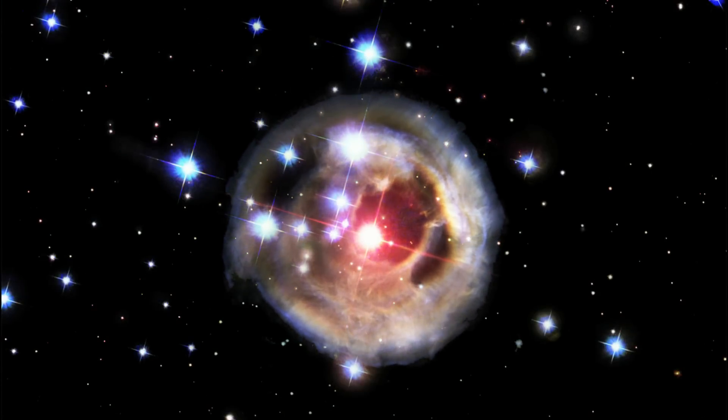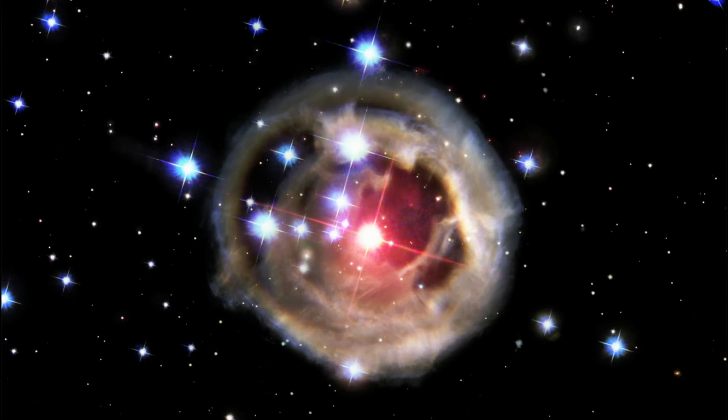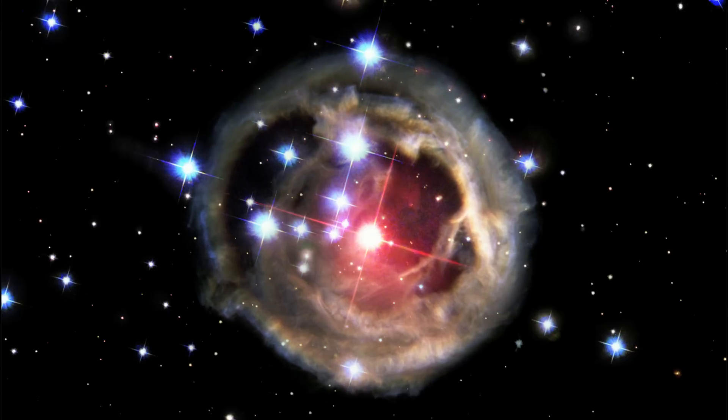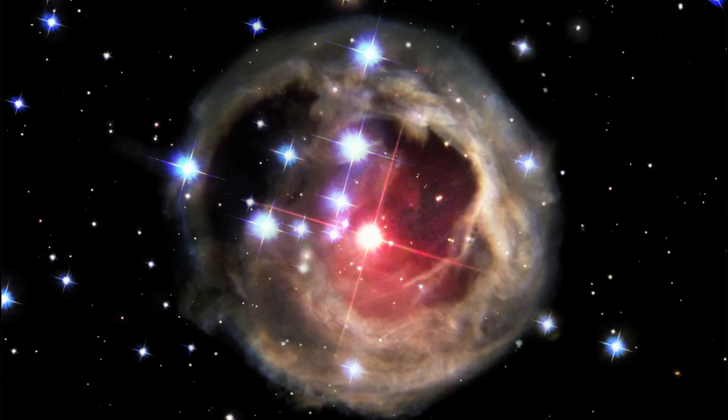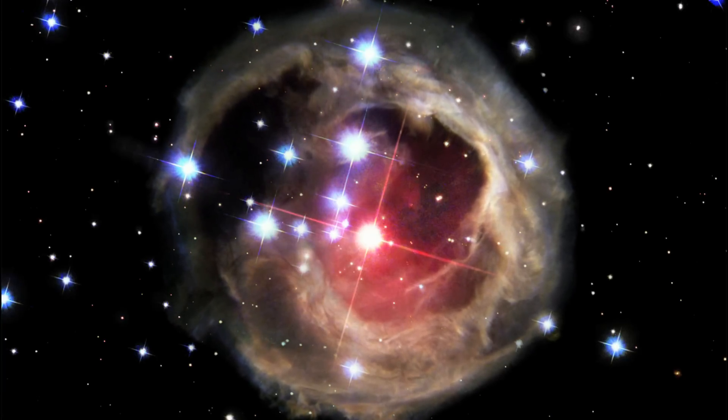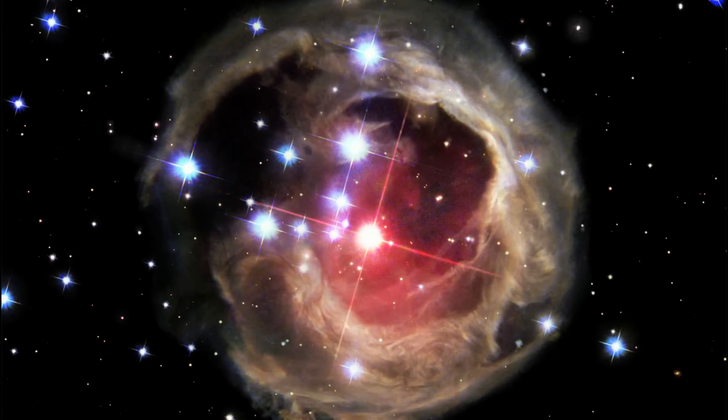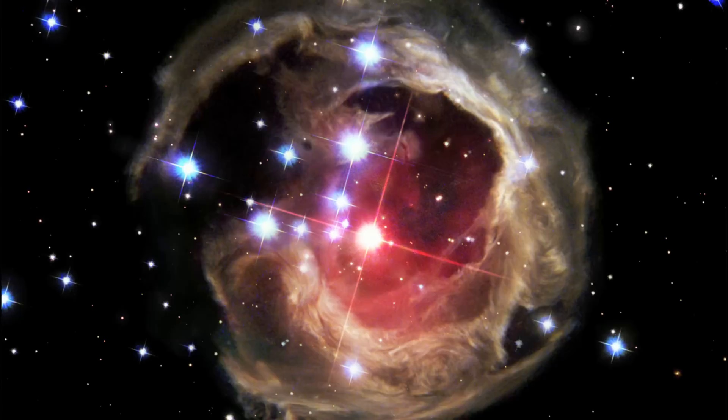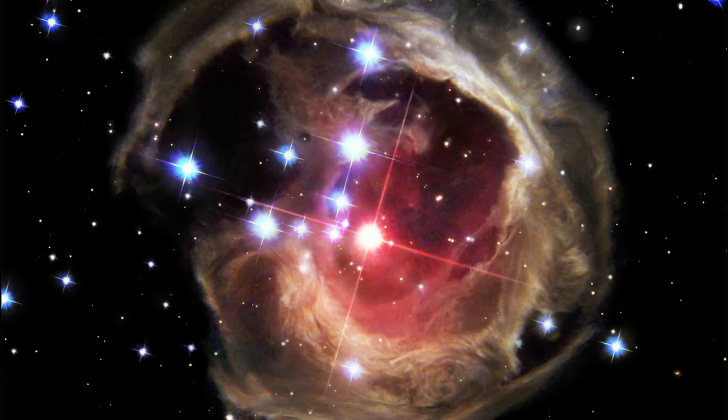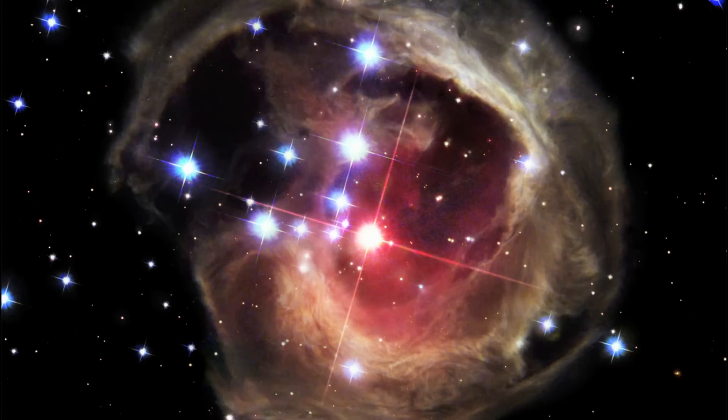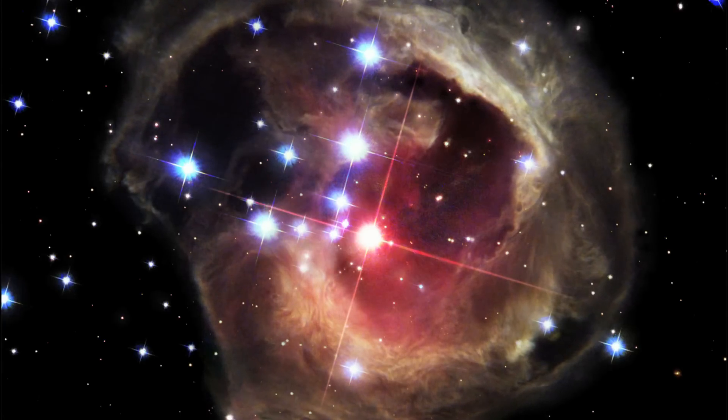Hubble also observed a light echo around variable star V838 Monocerotis in 2002. This is very much like the experience of an audible echo, where the listener hears a sound once and then again as the second wave takes a longer path bouncing off surrounding objects.